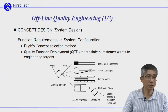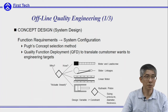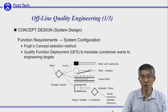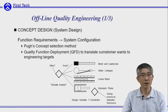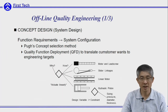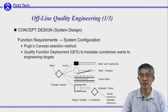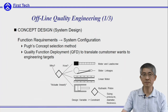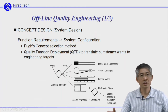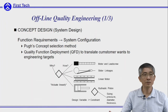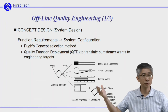Offline quality engineering proposes three stages to improve quality. The first one is concept design, the second one is parameter design, and the last one is tolerance control. In the first stage — system design — you map from the functional requirement to system configuration.